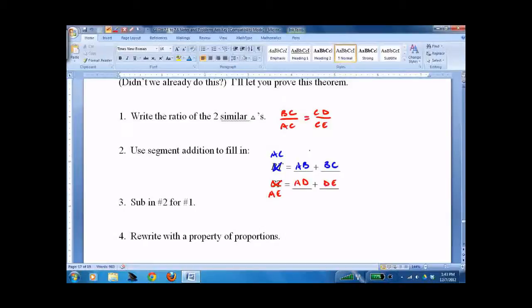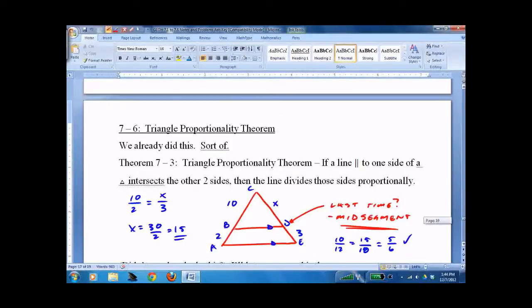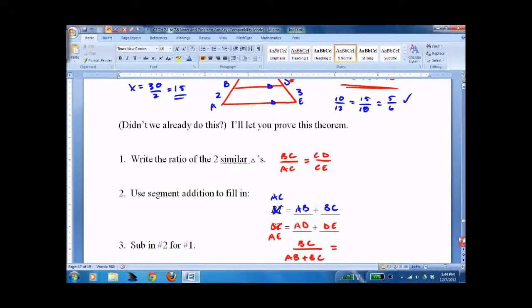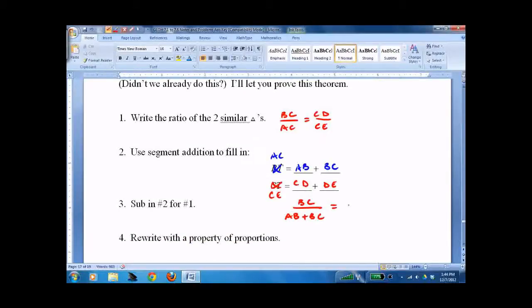And that equals AD plus DE. So we're going to sub in number 2 for number 1. Where it says AC, we'll put in AB plus BC. And where it says CE. That's wrong. BC over AC equals CD. That's wrong down here. This is CE. And CD. What a mess. So we'll write in CD plus DE on the bottom, CD on the top.